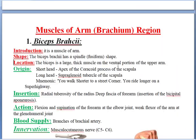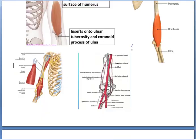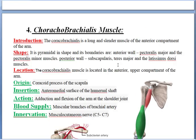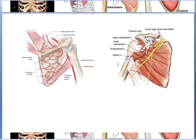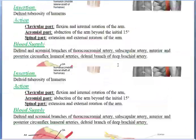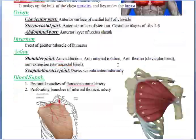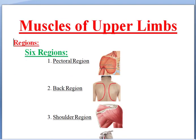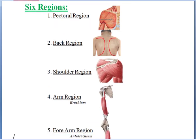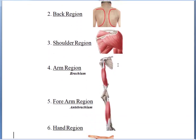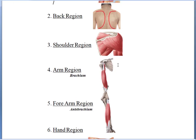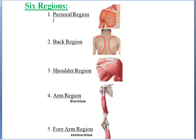So we have now discussed the triceps, biceps, brachialis, and coracobrachialis muscles. Up to now we have covered the muscles of the upper limb, which I divided into six regions: the pectoral region, the back region, the shoulder region, and the arm region. The muscles of these four regions have been recorded.